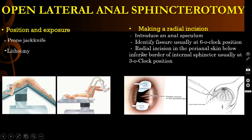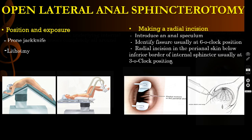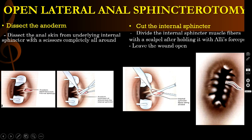Then you have to make a radial incision in the perianal skin below the inferior border of the internal sphincter, usually at the 3 o'clock position. Then you have to dissect the anal skin from the underlying internal sphincter with scissors completely all around. You have to undermine this anal mucosa and anal skin all around, freeing the anoderm from the underlying internal sphincter muscle.